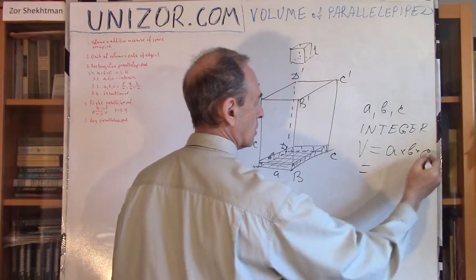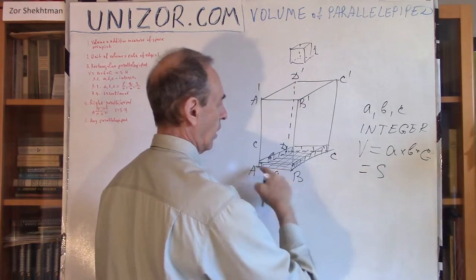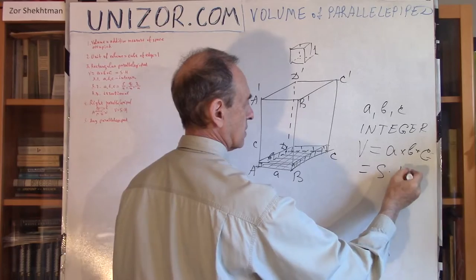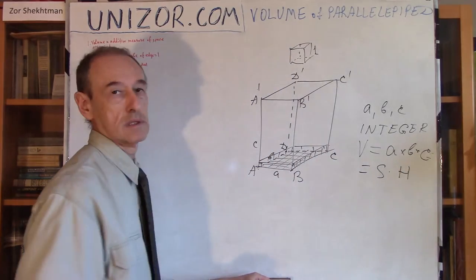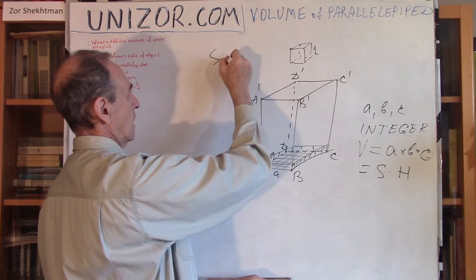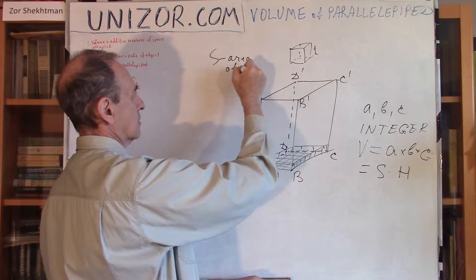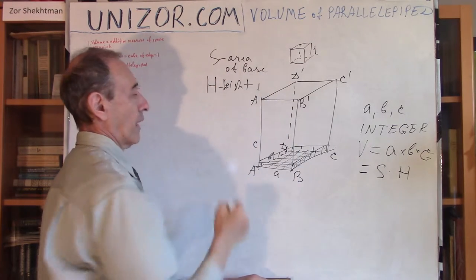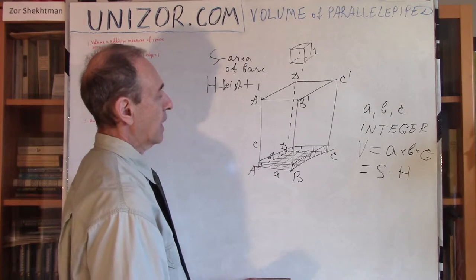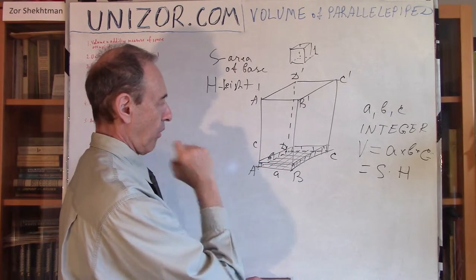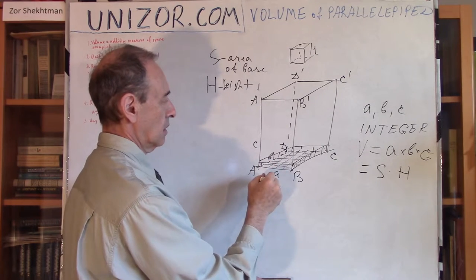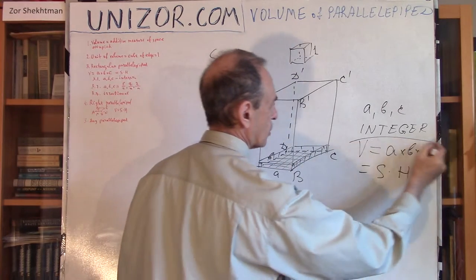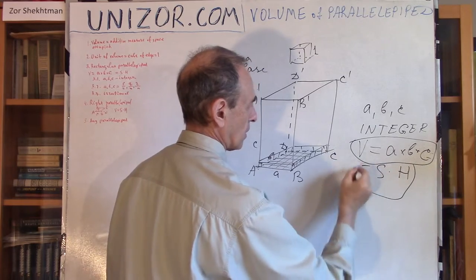So my volume would be equal to A times B times C. Or, if you wish, the area of the base, which is A times B, times the height, which is C. So S is the area of the base, and H is the height or altitude of the parallelepiped. In case of a rectangular parallelepiped with integer sides A, B, and C, the volume is measured as A×B×C or S×H.